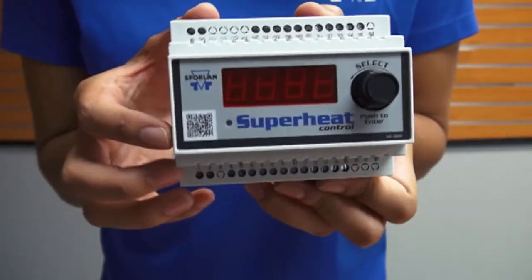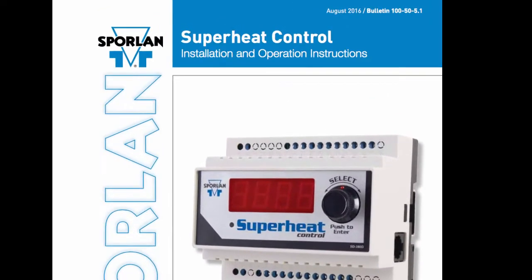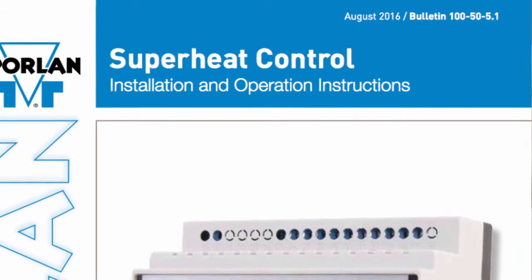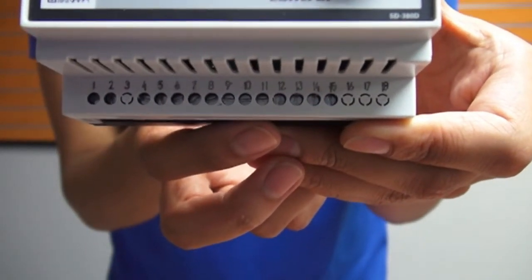The QR code in the lower left corner can be scanned and will give you Bulletin 100-50-5.1. If you look closely, you can see that I've highlighted the terminal labels to make it easier to see in the video.